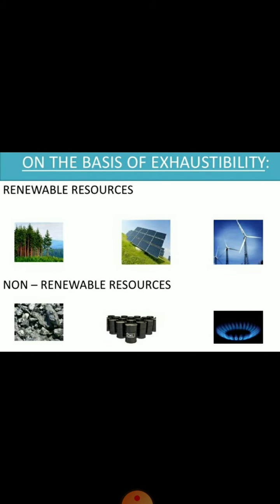On the basis of exhaustibility — Renewable resources: These are resources that can be used repeatedly, like water, sunlight and wind. Non-renewable resources: These are resources that form very slowly. A resource is considered to be non-renewable when it is exhausted at a rate faster than it was made. For example, fossil fuels, which have taken more than a million years to form.